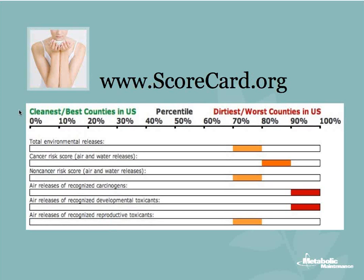I send my patients to www.scorecard.org — it's an anti-pollutant group. You type in your zip code and it tells you all about the pollutants being released within your county, and you can compare it to the rest of the country. I typed in my zip code in Connecticut, New Haven County, and we have the top 10% of air releases of recognized carcinogens as well as developmental and reproductive toxins. No wonder we see so much infertility in my practice. The website will also show you what health conditions those certain pollutants cause.